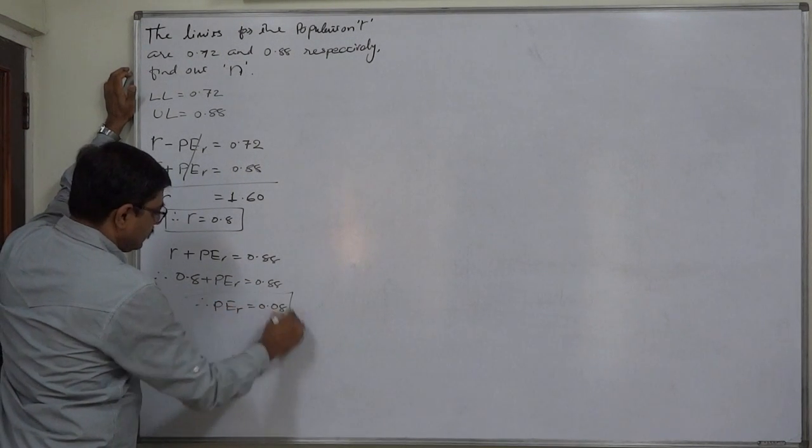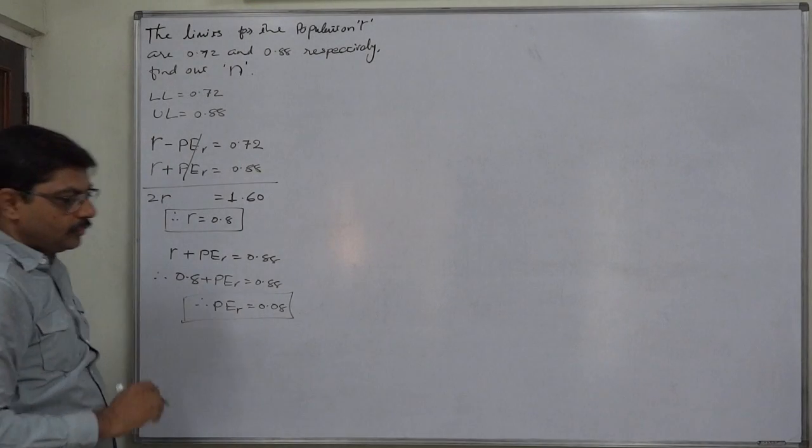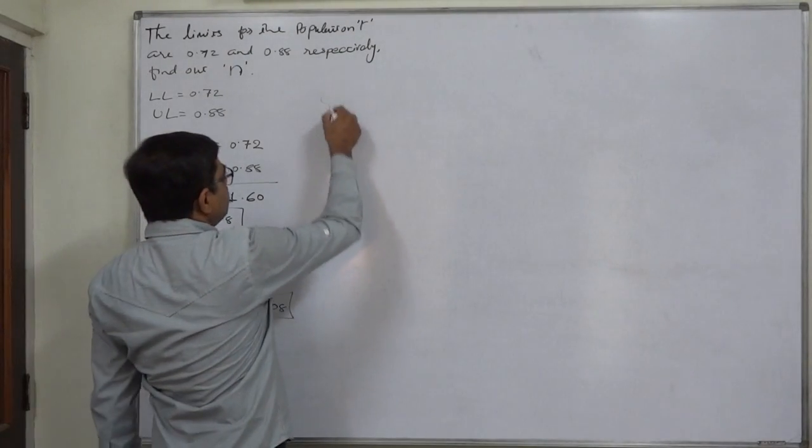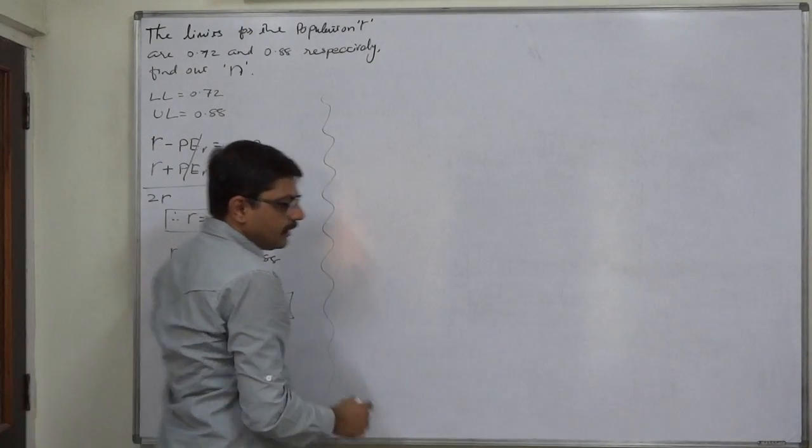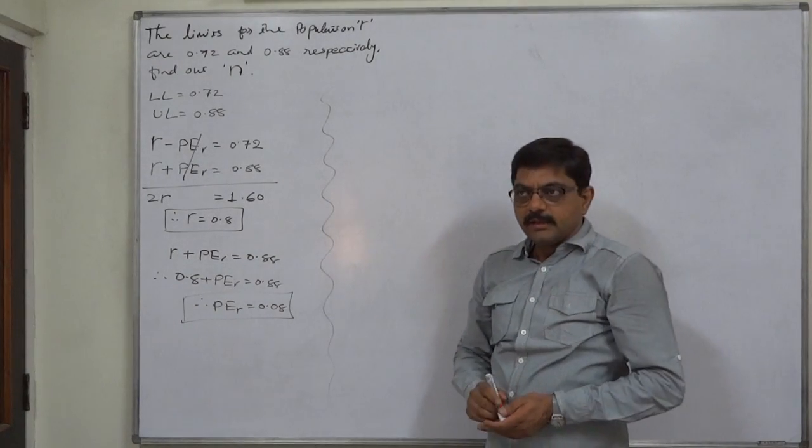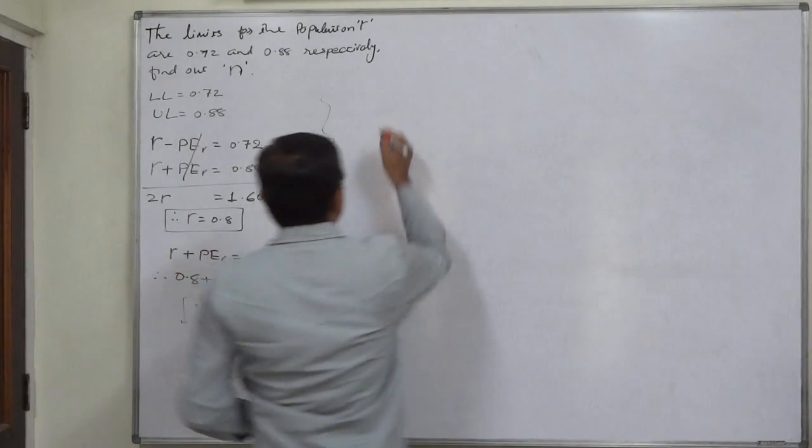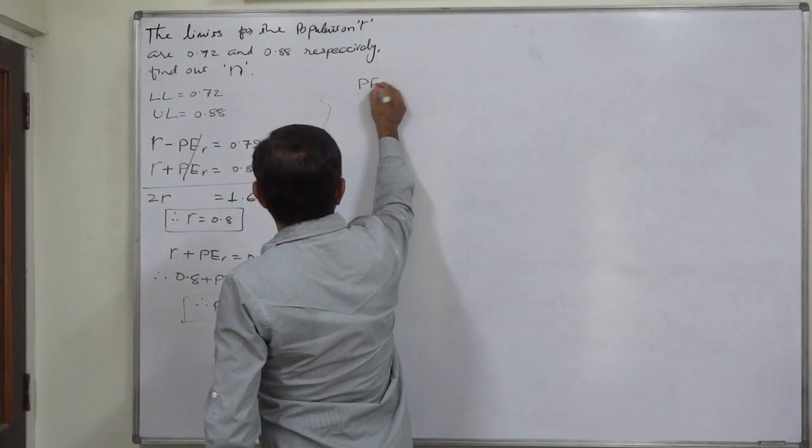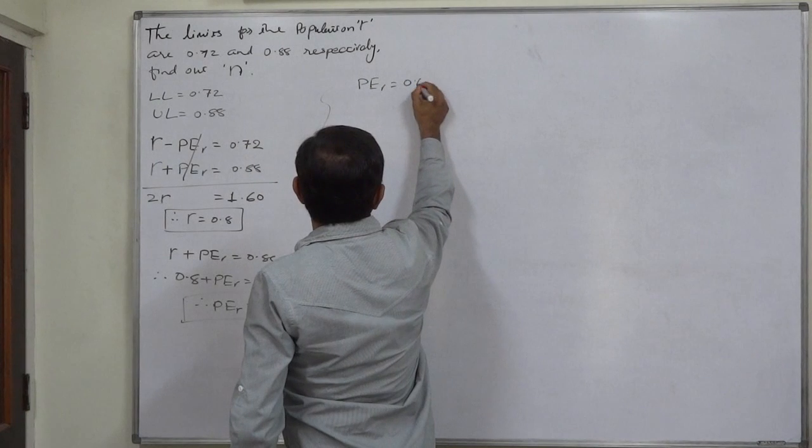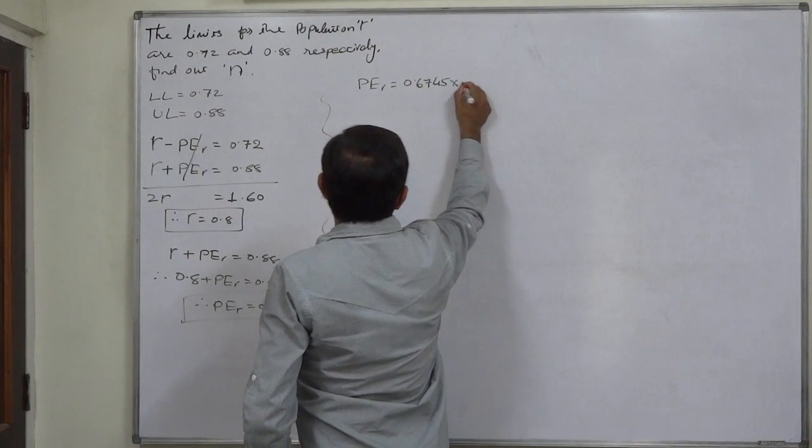Now we have these two. If we substitute these two into the formula of probable error, we can have N or sample size as a result of the reverse calculations. The formula to calculate probable error is 0.6745 into 1 minus coefficient squared upon under root N.